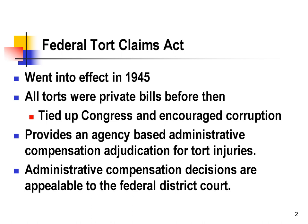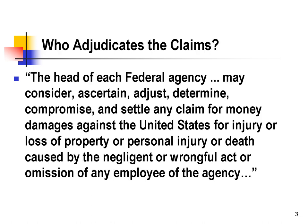The Federal Tort Claims Act sets up an administrative compensation system, and the decisions of this administrative compensation system are then appealable to the federal district court. The claims are adjudicated by the head of the federal agency that was responsible for the action that led to the damages.